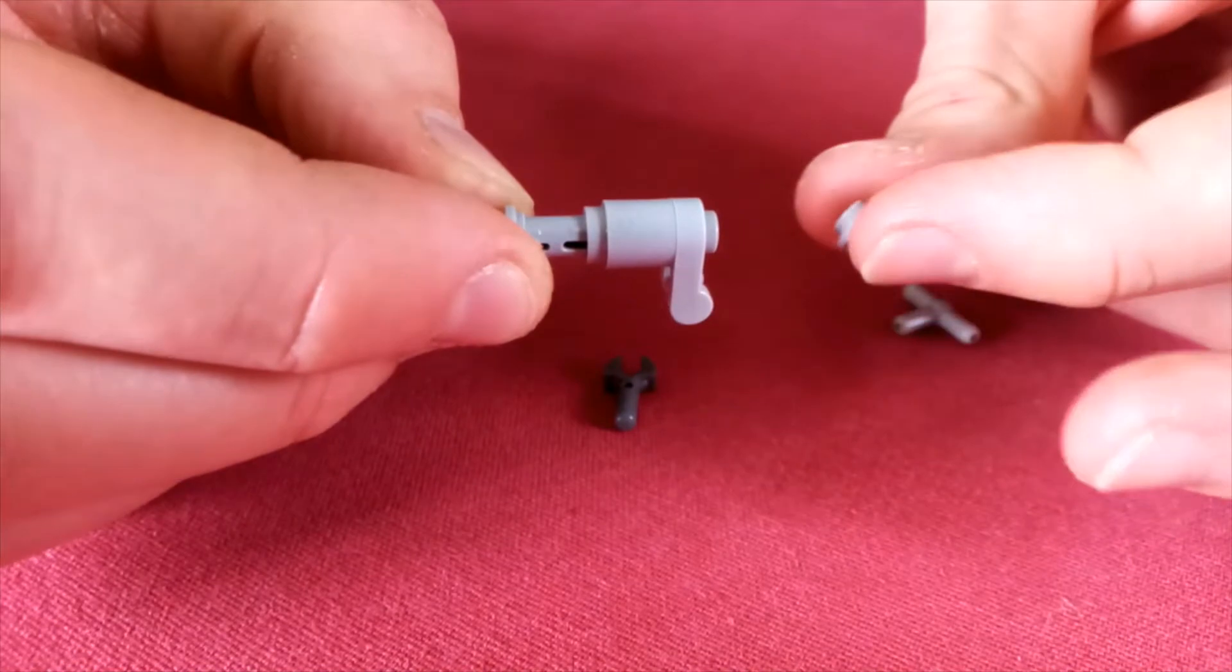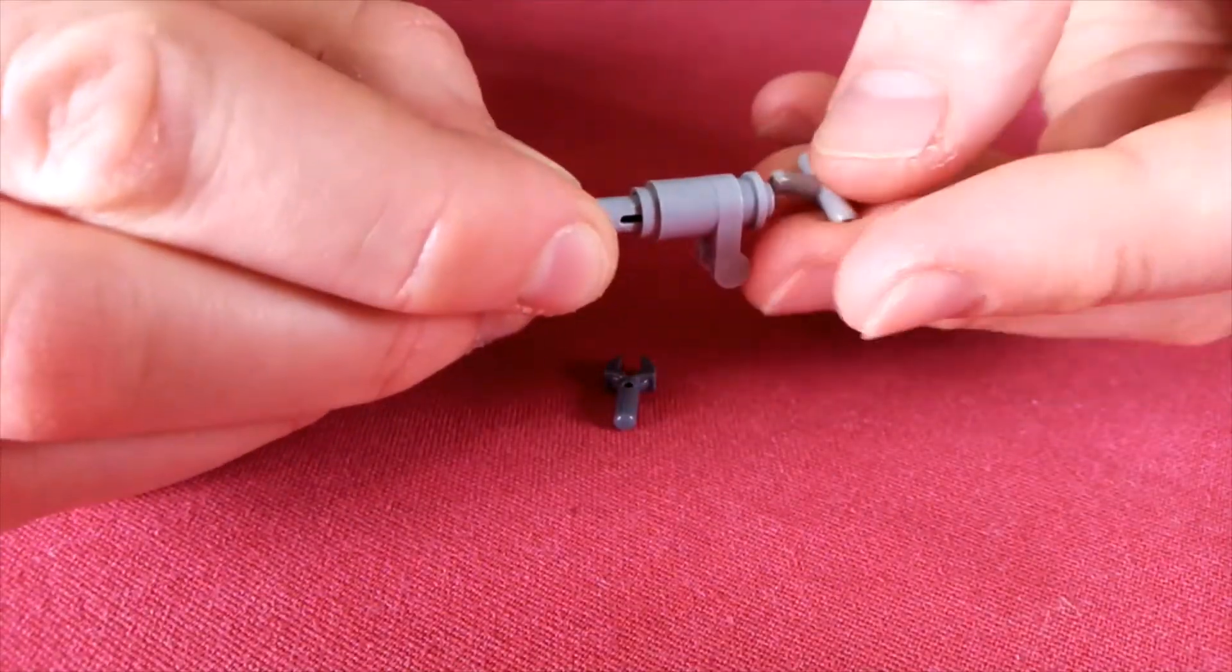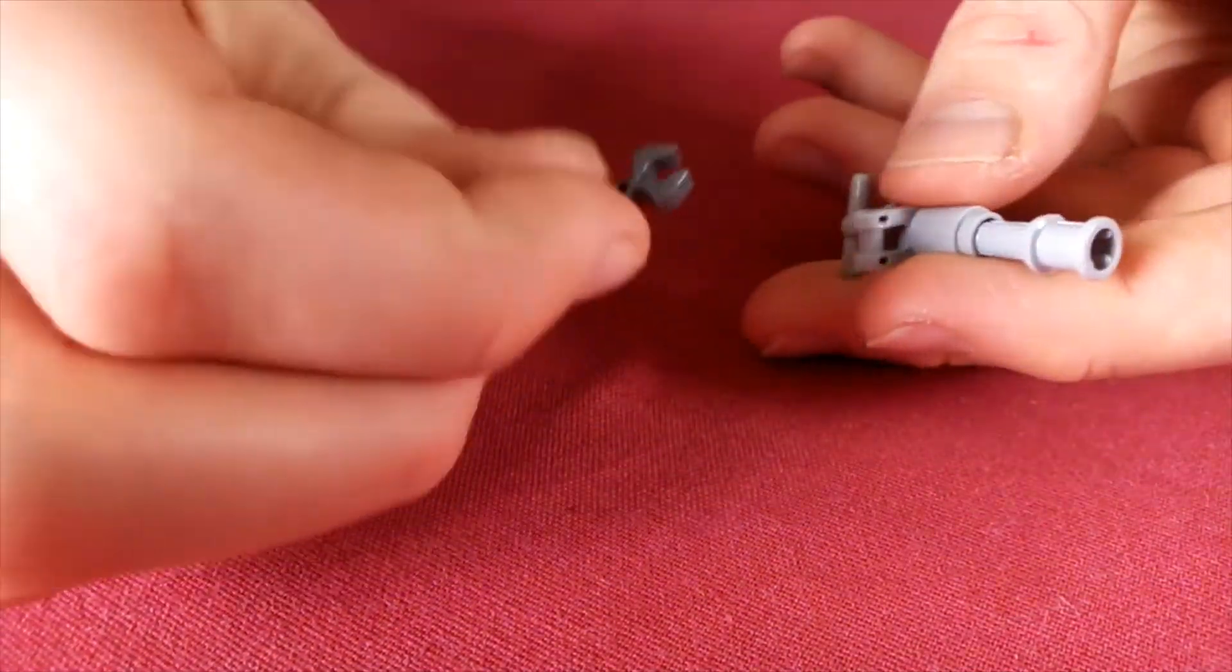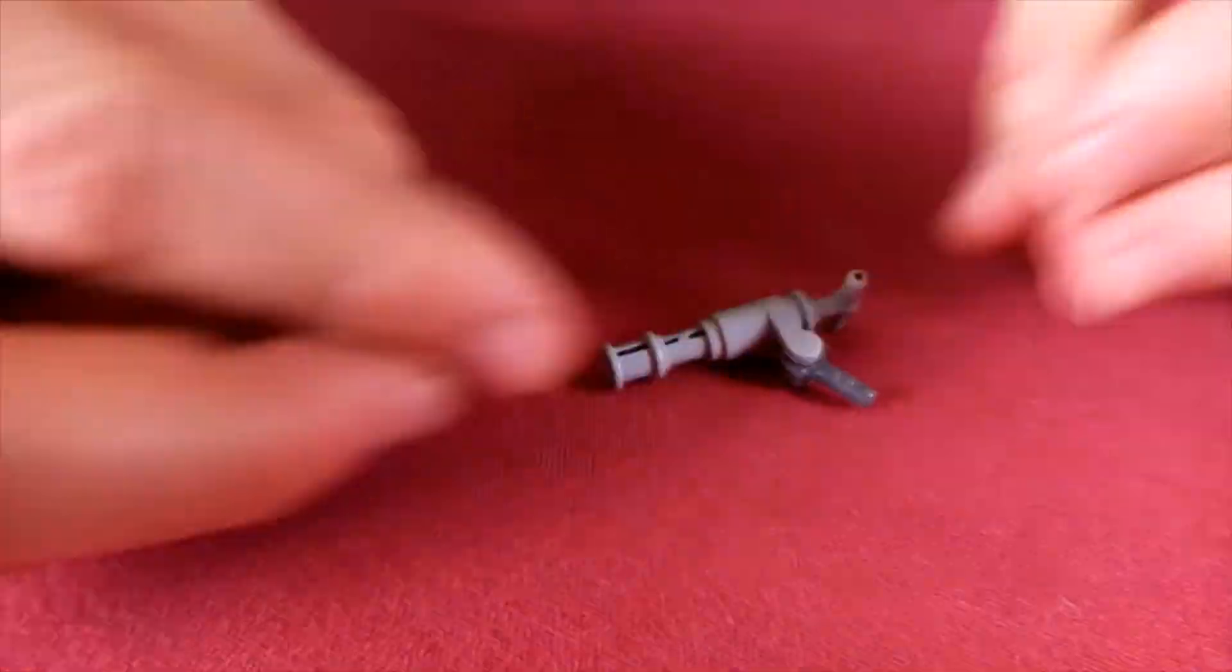Next, you'll need a stud with a hole in the end, goes on the end there, and then a handle piece on the end before finally this claw piece clips onto that bar. And that's the gun done.